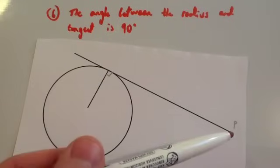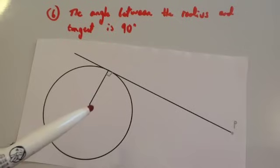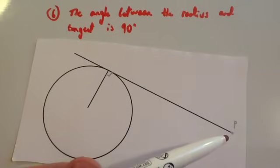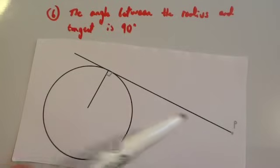For instance, if you were to join P to the center of the circle, then it's a right angle triangle, from here to here being the hypotenuse. Also, if you were to join that up, you can work out angles using trigonometry and so on.